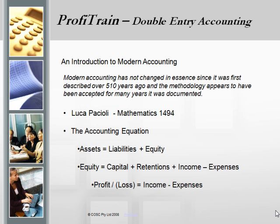Another way of looking at equity is that it equals the capital input, plus retention, or minus any accumulated losses, plus current income, minus current expenses. Profit or loss is income minus expenses. They're the basic accounting equations that we operate with.